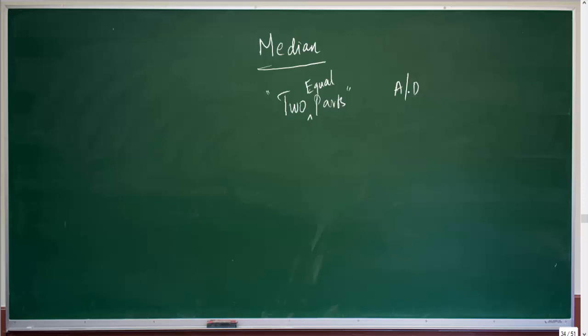How to find median depends upon the kind of information you have. If you have individual series of data — that is, not in frequency distribution or group form — then you have to look at whether the number of observations is even or odd. When the number of observations is even, you have a different approach, and when odd, you have a different approach.